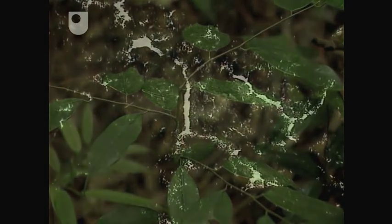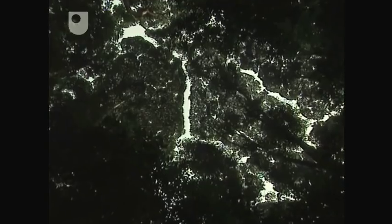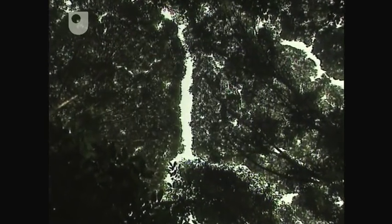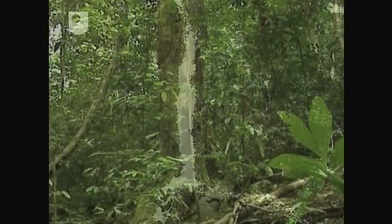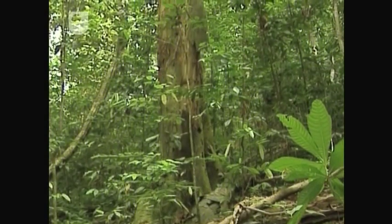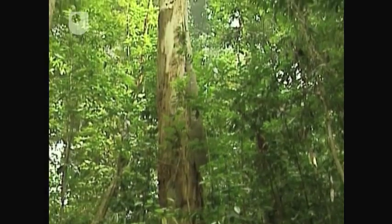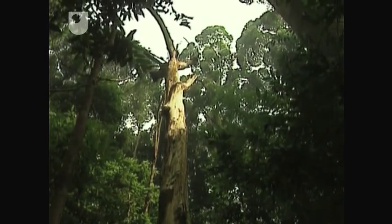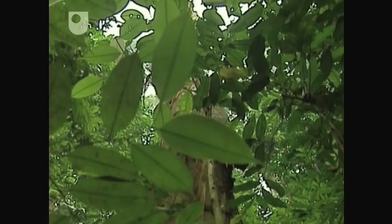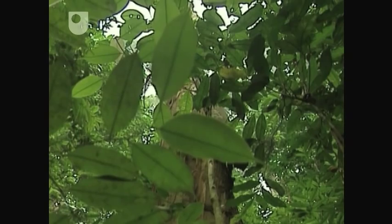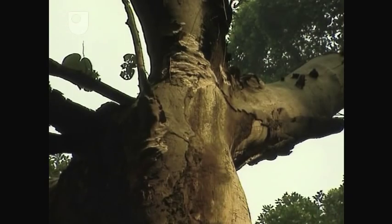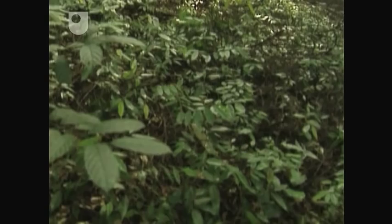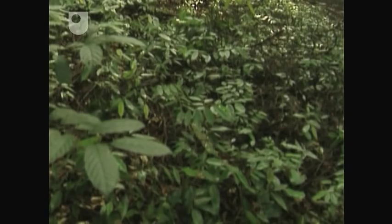Dipterocarp seedlings are often overshadowed by their parents. They're in very deep shade where many kinds of tree wouldn't grow at all. In effect they're waiting for dead men's shoes. If an older tree dies or falls a gap in the canopy suddenly appears. Light floods in to fuel growth. Eventually one of the seedlings will take the place of the dead tree in the canopy.